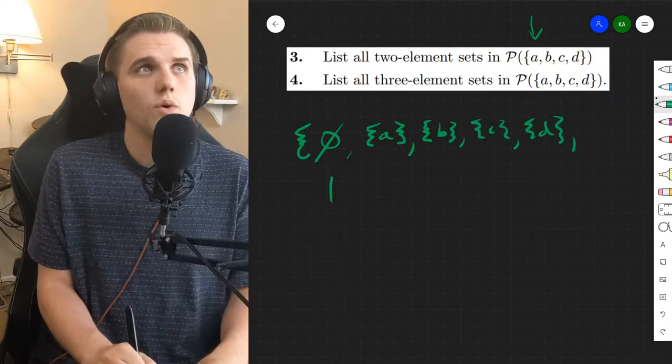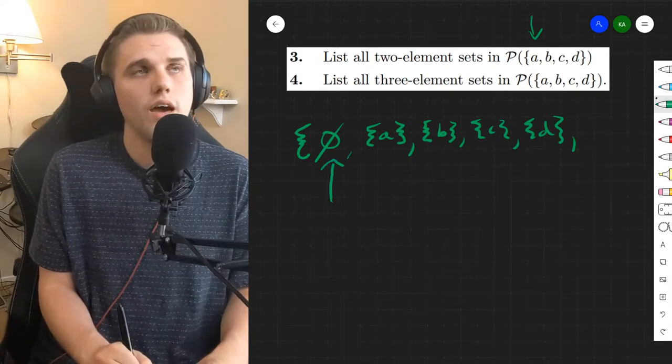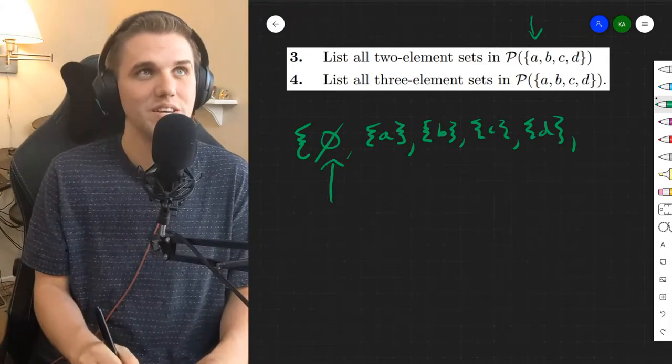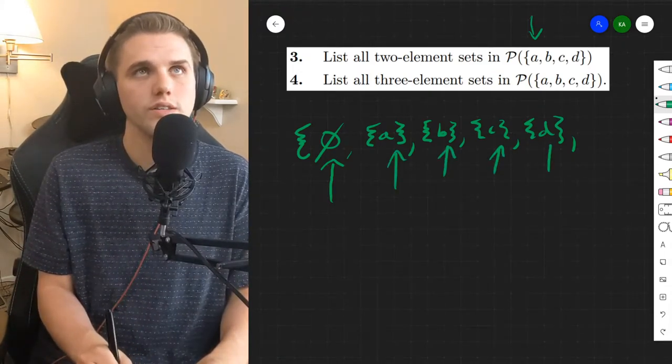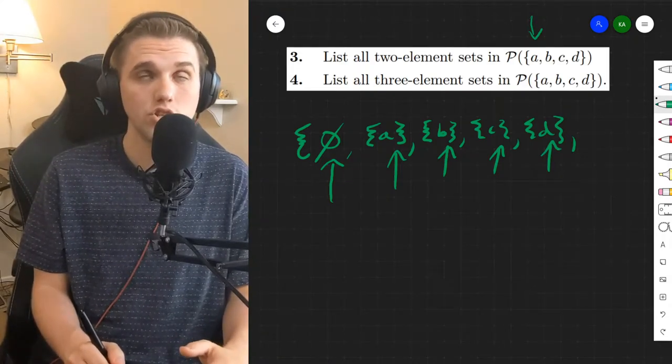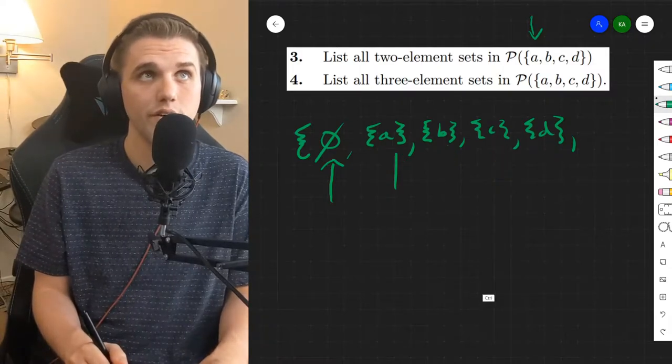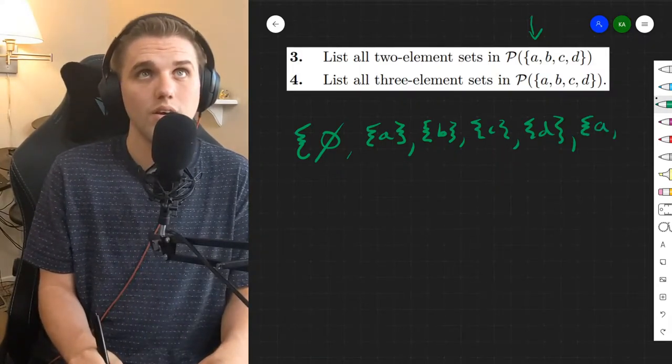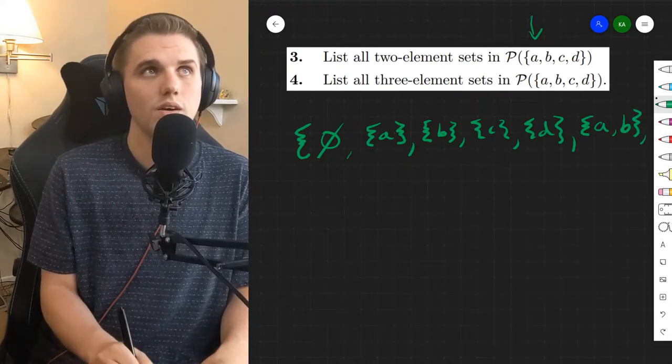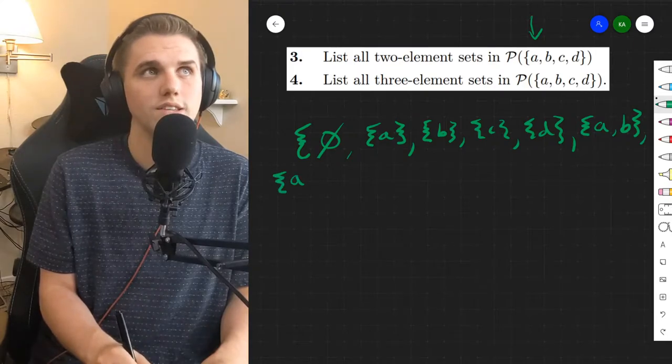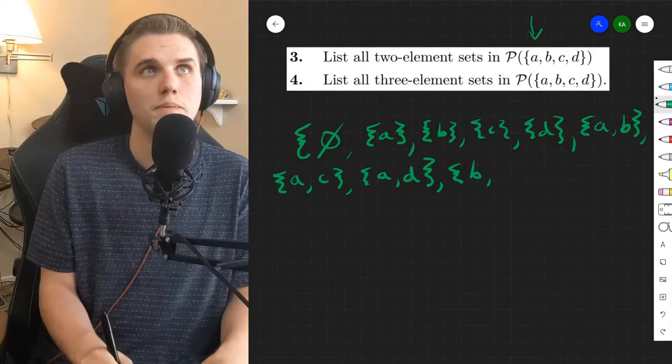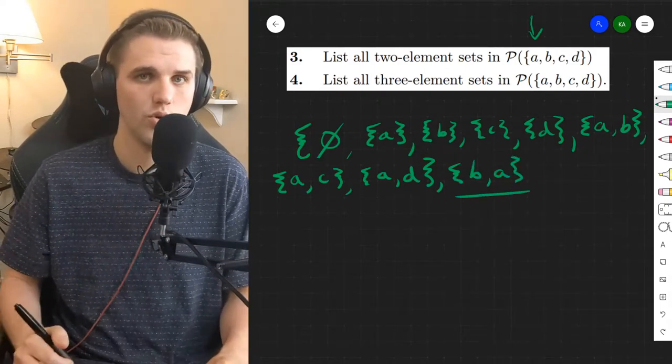We have one element that has zero elements inside that element. We have four sets that have one element, and the question for number three is how many two-element sets are we going to have? Well, let's actually try to compute this by hand. We have {a, d}, we can have {a, b}, we can have {a, c}, we can have {a, d}. We can do b and a, but I want to talk about this real quick.